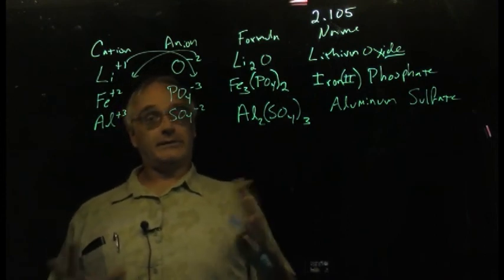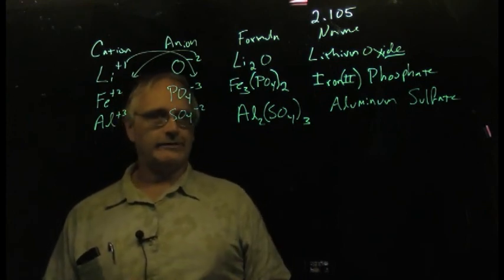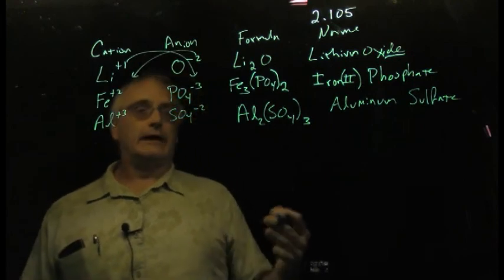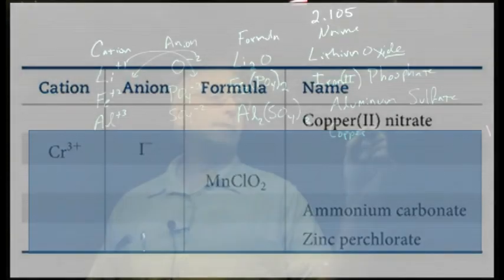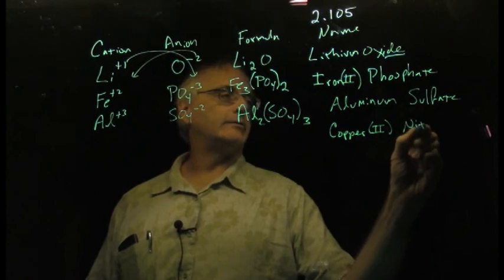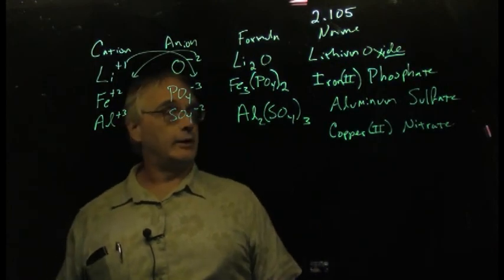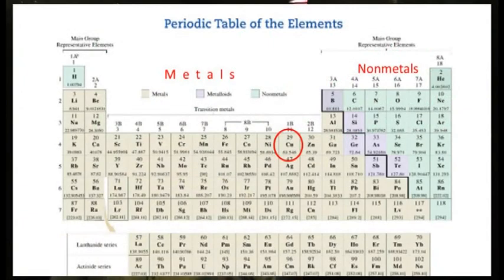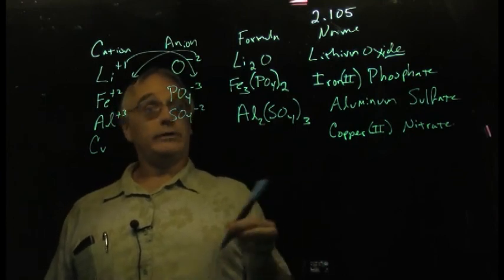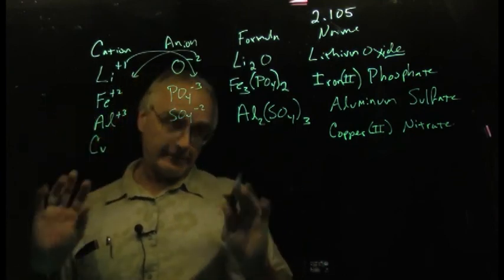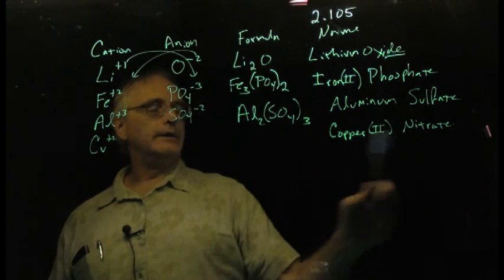The next one, they give us the name again. They say copper, they put a Roman numeral, and they put a two in there, and then they say nitrate. Roman numeral - we are dealing with transition metal, and sure enough, copper does come from the center section of the periodic table. It is Cu. And now, what charge do we put on it? Remember, transition metals, the charge can vary sometimes. That's why we have to tell you, and we've told you.